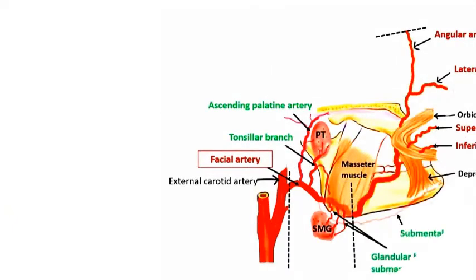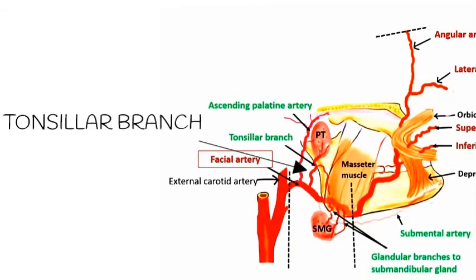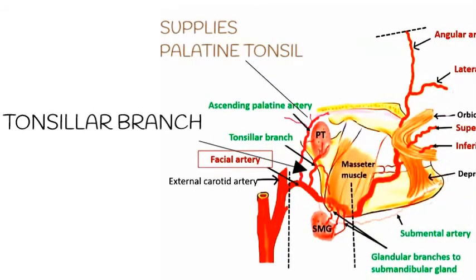The tonsillar branch ascends between the styloglossus and the medial pterygoid muscle before piercing the superior pharyngeal constrictor to reach the palatine tonsil.